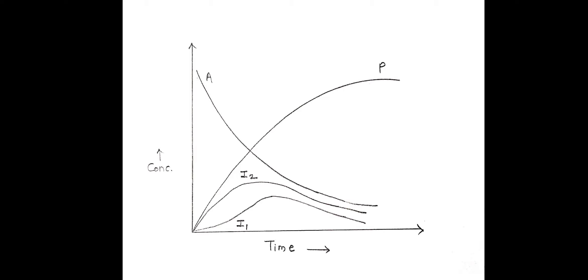When we consider this reaction, it is observed that initially we have A at higher concentration. As the reaction proceeds, the concentration of A starts to decrease. When the concentration of A decreases, the concentration of I1 starts to increase. After some time, when I1 is converted into I2, the concentration of I2 starts to increase and concentration of I1 starts to decrease. Finally, when I2 is converted into the product, the concentration of P increases and concentration of I2 starts to decrease.